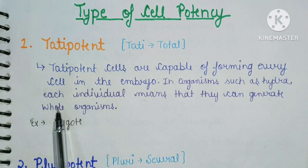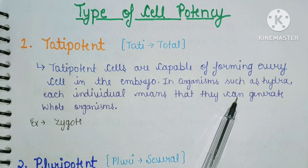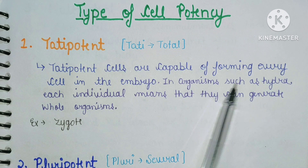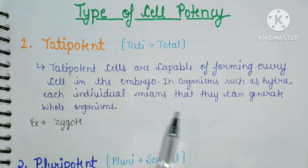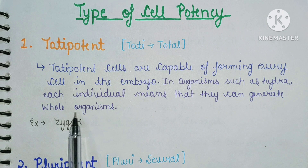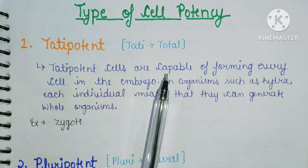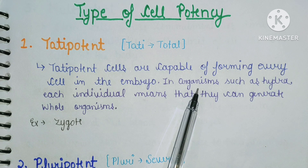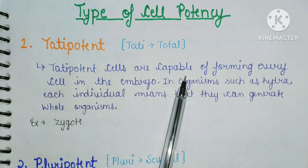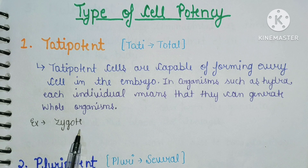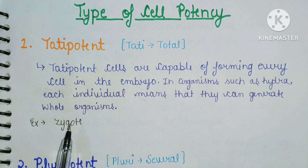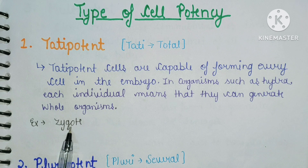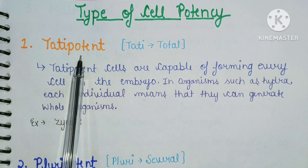In organisms such as hydra, their body parts can generate whole organisms. Similarly, the embryo has the capability to form all cells. For example, the zygote — which is a single cell — when it differentiates, it becomes an embryo and then an organism. The zygote is a classic example of a totipotent cell.